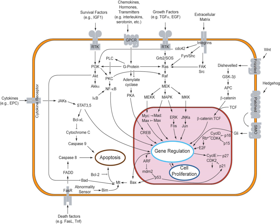In a multicellular organism, signaling between cells occurs either through release into the extracellular space — divided into paracrine signaling and endocrine signaling over long distances — or by direct contact, known as juxtacrine signaling. Autocrine signaling is a special case of paracrine signaling where the secreting cell has the ability to respond to the secreted signaling molecule. Synaptic signaling is a special case of paracrine or juxtacrine signaling between neurons and target cells. Signaling molecules interact with a target cell as a ligand to cell surface receptors, and/or by entering into the cell through its membrane or endocytosis for intracrine signaling.